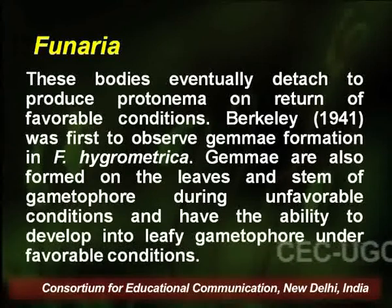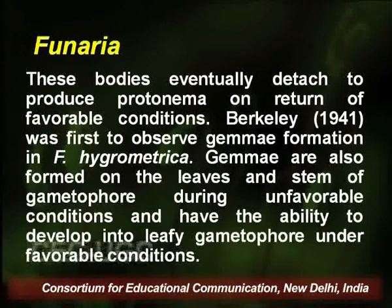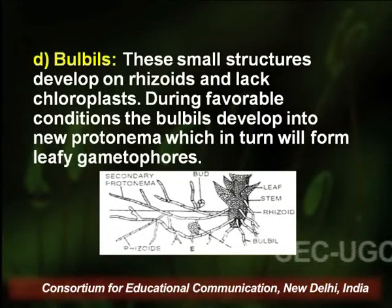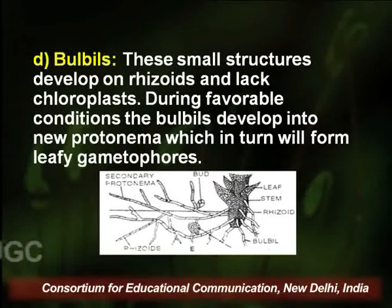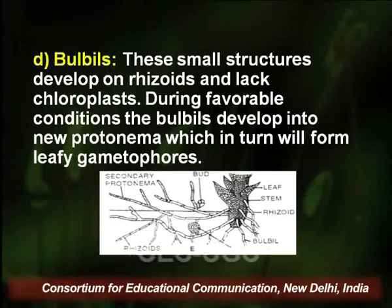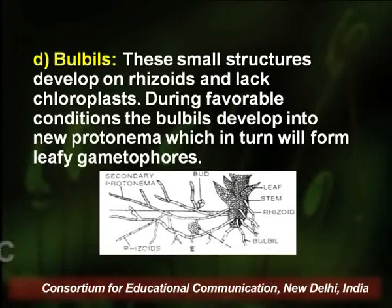Burkeley observed gemmae for the first time in Funaria hygrometrica in 1941. Gemmae are also formed on the leaves and stems of the gametophyte during favorable conditions and can develop into leafy gametophores. Additionally, vegetative structures called bulbils are formed on rhizoids, lack chloroplasts, and during favorable conditions develop into new protonema, which in turn form leafy gametophytes.